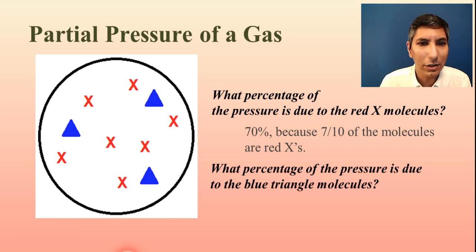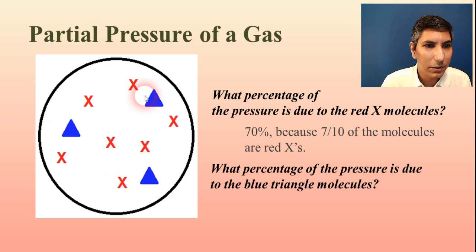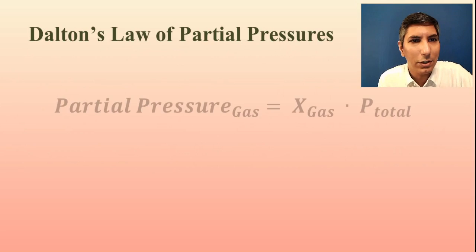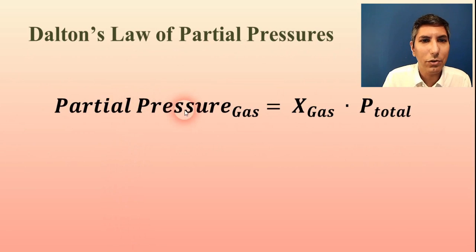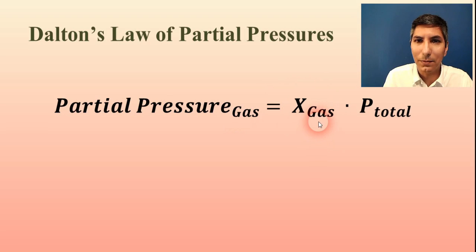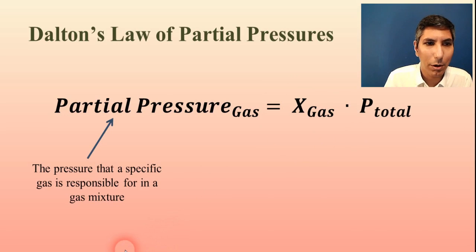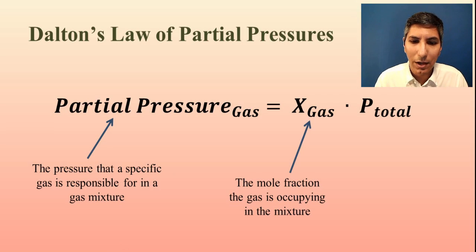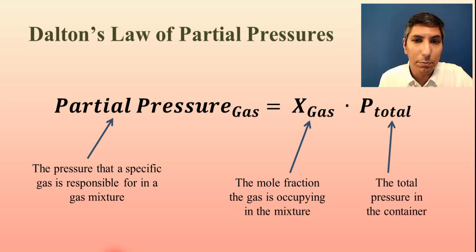And likewise, if I were to ask what percentage of the pressure in that container is due to the blue triangle molecules, it would be three out of the total 10, which is 30%. This is telling us how we determine the partial pressure of a gas — this is the premise behind Dalton's Law of Partial Pressures. Dalton's Law basically tells us that the partial pressure of a gas is equal to the mole fraction that that gas is taking up in the container multiplied by the total pressure. The X we have written here is the mole fraction, and P total represents the total pressure in the container.